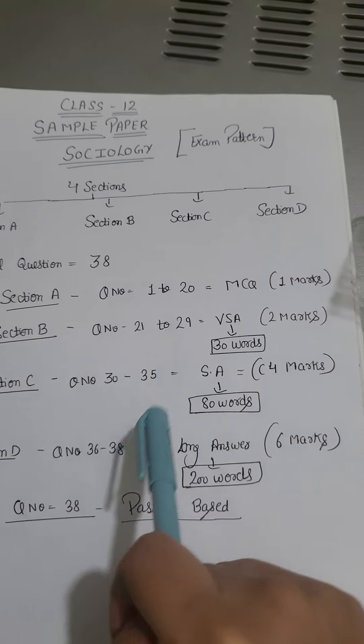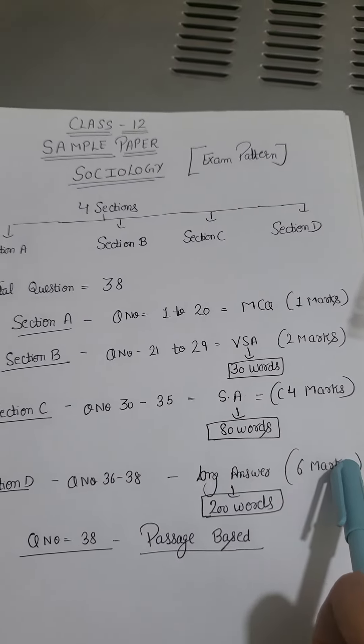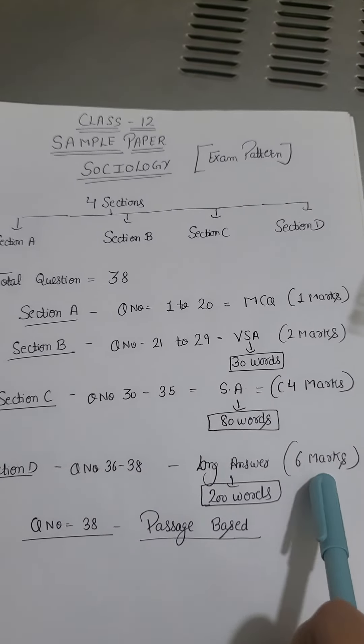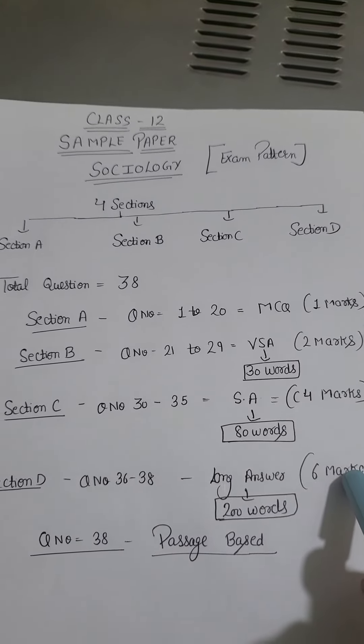These 3 questions will be in section D, which will be long answers, 6 marks. The question is, you have to write within the word limit. You will ask how many pages to write. Don't focus on pages. Look at the word limit.